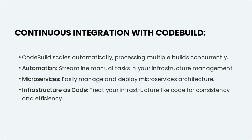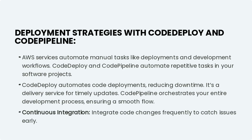Automation streamlines manual tasks in your infrastructure management. Microservices allow you to easily manage and deploy microservices architecture. Infrastructure as code means treating your infrastructure like code for consistency and efficiency. AWS services automate manual tasks like deployments and development workflows.